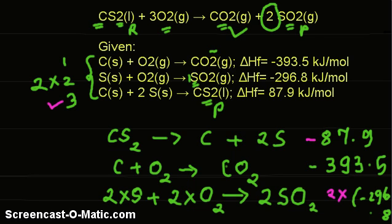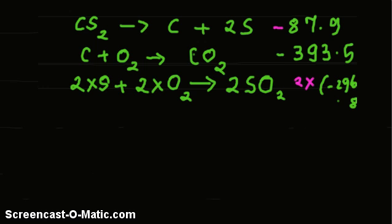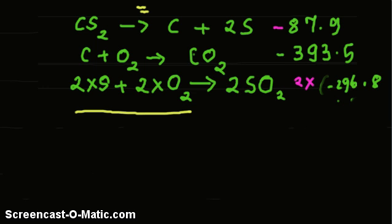Now, how do we simplify this combined equation? We treat it like a simple mathematics problem — the arrow is just like an equals sign, with a left-hand side and a right-hand side, allowing us to cancel common terms across both sides.